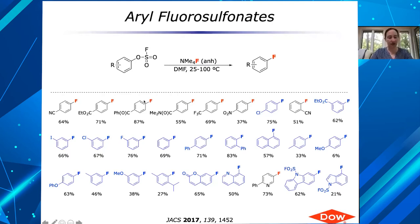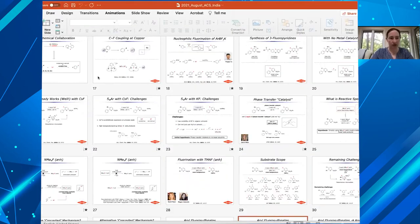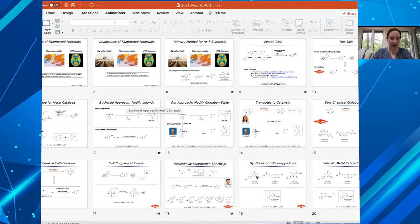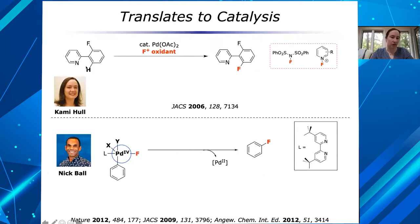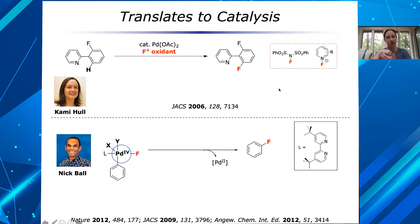I showed an example of directed C-H activation catalyzed by palladium. Using a directing group, you do a C-H activation and then a fluorination — that works well with palladium catalysis. We also have examples, and other groups have examples, where people use copper catalysis to do aryl fluorination using a directing group approach. There are also many examples of SP3 C-H fluorination using a radical mechanism with fluorine sources. So there are ways to do it.